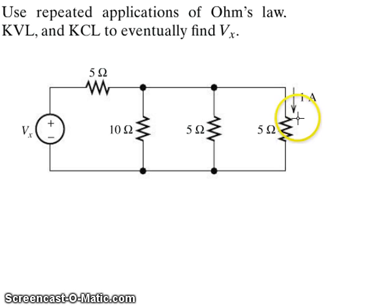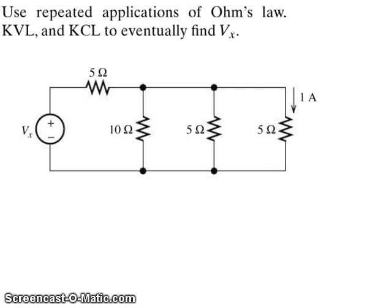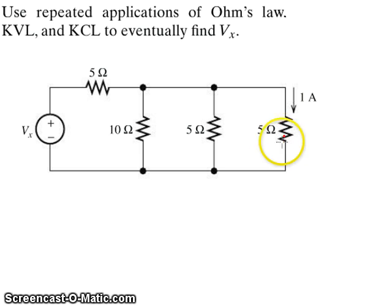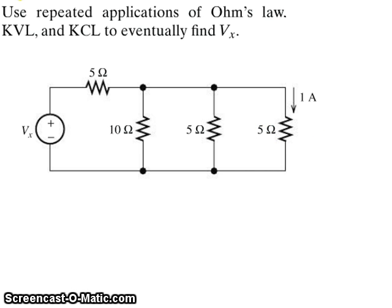Let's start at the rightmost 5 ohm resistor. We have a 1 amp current going to the 5 ohm resistor. Applying Ohm's law — V equals IR — a 1 amp current going through a 5 ohm resistor produces a total voltage drop across this resistor of 5 volts.